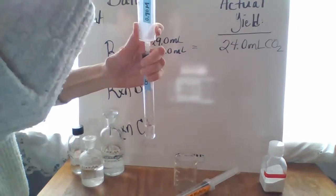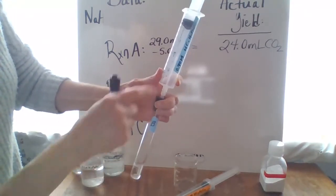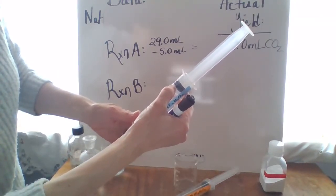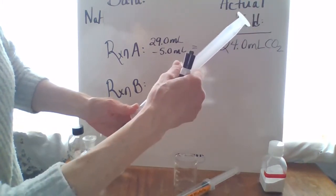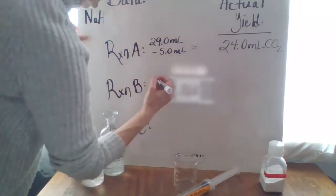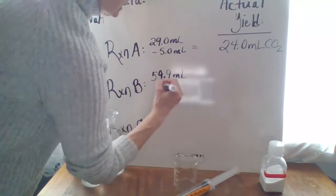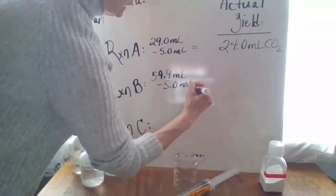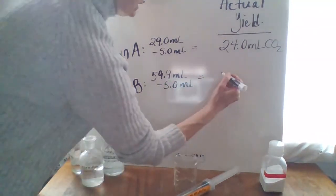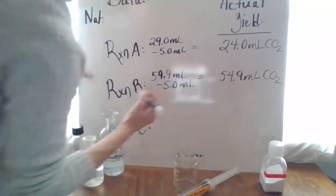For the next one, this is reaction B with the 0.40 molar acetic acid. We can see that that reads in the 59 point, it's like 59.9. And we'll subtract our 5.0 milliliters, which was the amount of acetic acid that was put into the reaction system. So that gives us 54.9 milliliters of carbon dioxide.